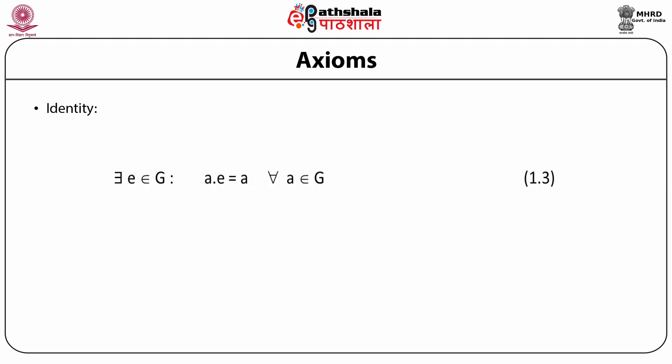The next property is the property of inverse, which says that for every element A belonging to the group G, there exists an element B which also belongs to G such that A·B equals the identity element E. That is, B equals A inverse. This is how we define the inverse.